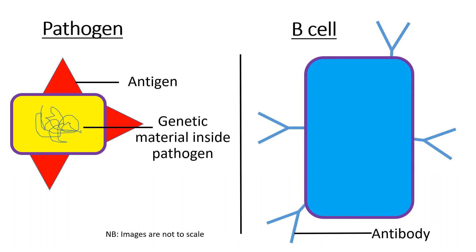To start with, we have a pathogen and a B cell. The pathogen has genetic material inside it and antigens on its surface. The B cell has antibodies fixed onto its surface membrane — it's important to note that these are antibodies fixed to the surface of the B cell, not the antibodies that are produced and released into the bloodstream.